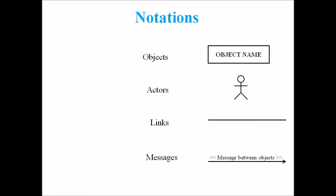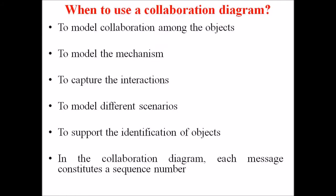So these are the different notations used in a collaboration diagram. Then there arises a question: when do we have to use a collaboration diagram? Collaboration diagrams are used when it is essential to depict the relationship between objects. Both the sequence and the collaboration diagram represent the same information but the way of portraying it is quite different. Collaboration diagrams are best suited for analyzing use cases.